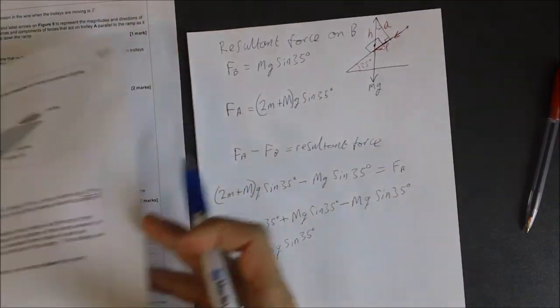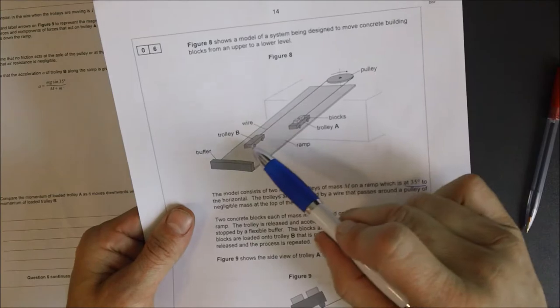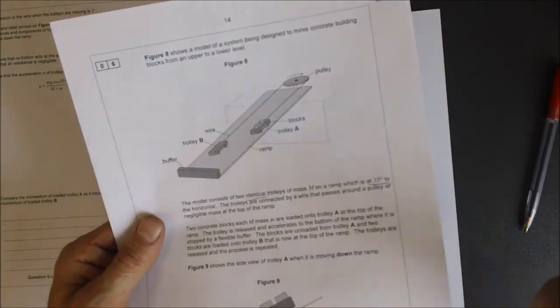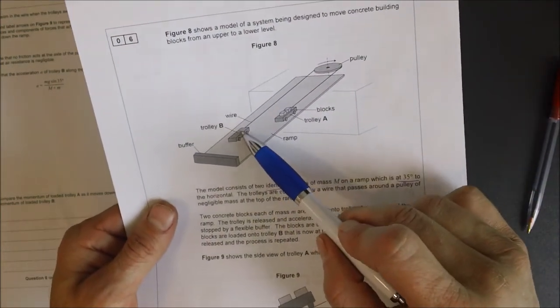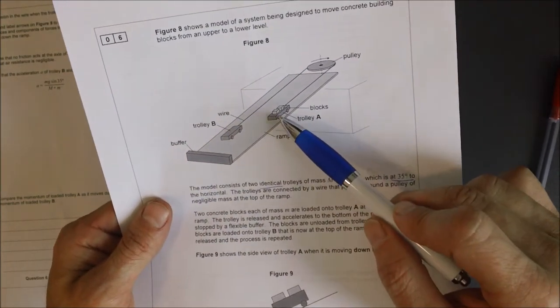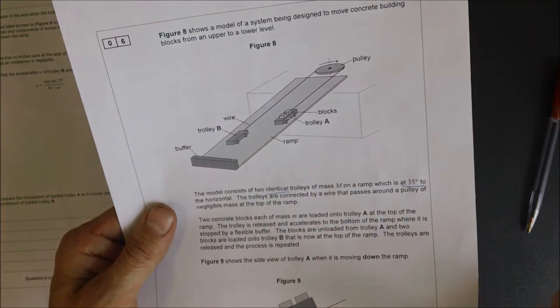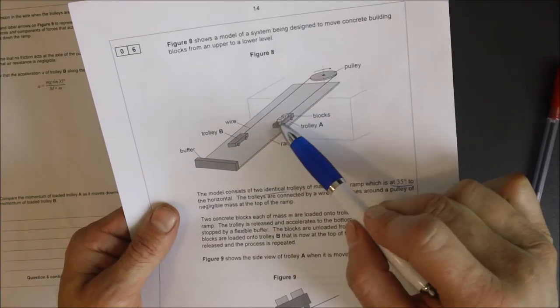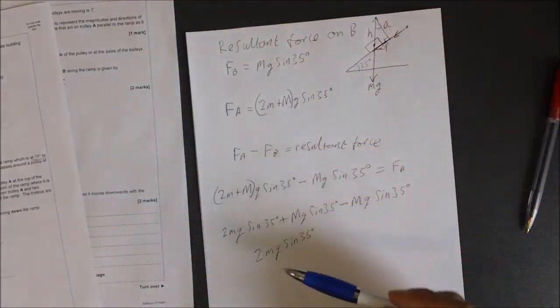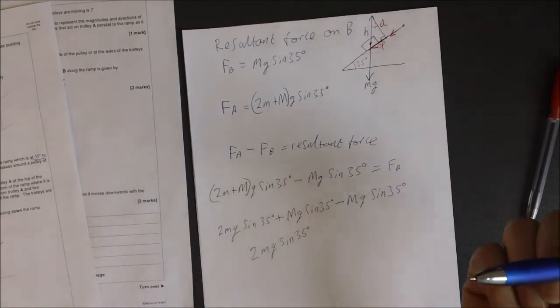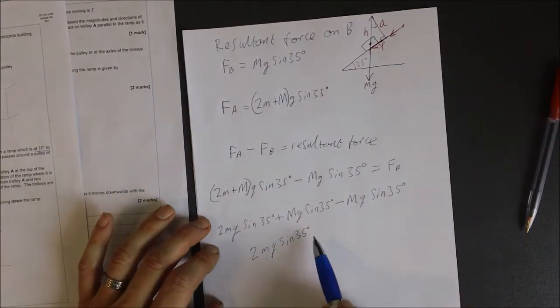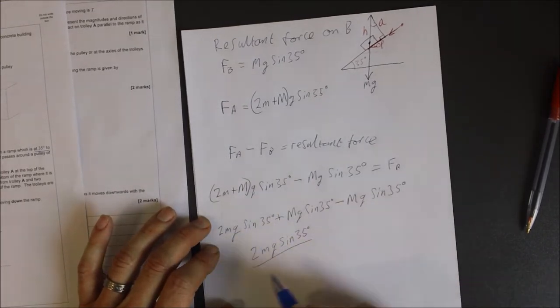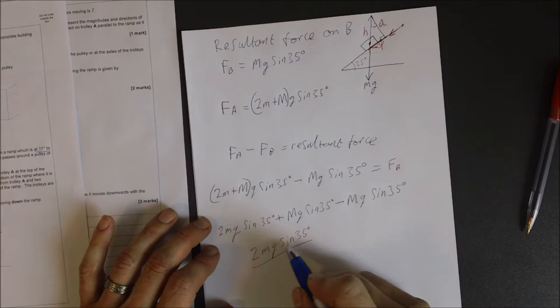Now we could have done that logically and just looked at this here and said, well, if those two trolleys were identical, they would just stay there. Newton's third law tells us this. We've got a resultant force from B, which is exactly equal and opposite to resultant force from A. Therefore, they're going to stay stationary. So the only thing that's accelerating them is the two blocks. So I've just proved mathematically that that is the case. But we could have instinctively actually worked out that that would have been the case. The resultant force would have been two little mg times sine 35.